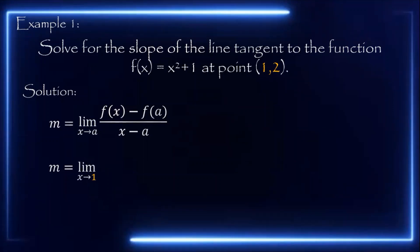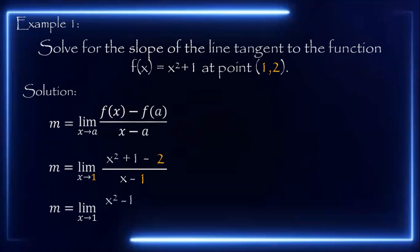Next, we identify f(x), which is the given function: x squared plus 1. Then minus f(a), where f(a) is the y-value of the given point, which is 2. All over x minus a, where a is 1. We then simplify the numerator by combining 1 and negative 2, which gives negative 1. So the numerator becomes x squared minus 1, all over x minus 1, as x approaches 1.